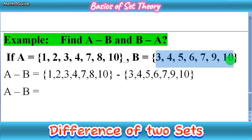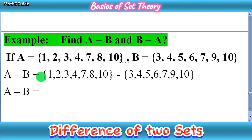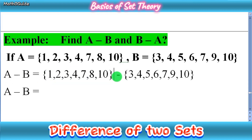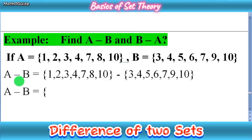First, we find A minus B. On the left-hand side we write A minus B, then an equal sign. We fill in set A — which has 1, 2, 3, 4, 7, 8, 10 — followed by the minus symbol, then set B — which has 3, 4, 5, 6, 7, 9, 10. A minus B means we write all elements of A that are not present in set B.